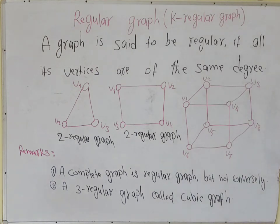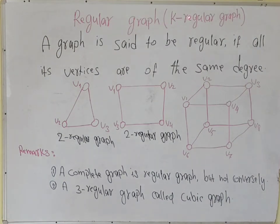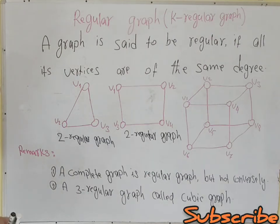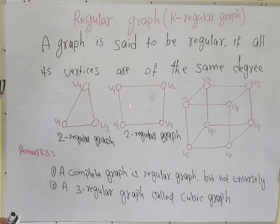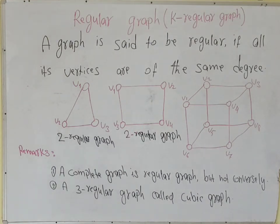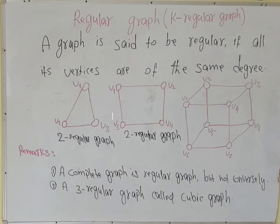A regular graph of degree k is always denoted as a k-regular graph. Let's go to the second graph. This graph is also a two-regular graph, because every vertex of this graph has degree two.